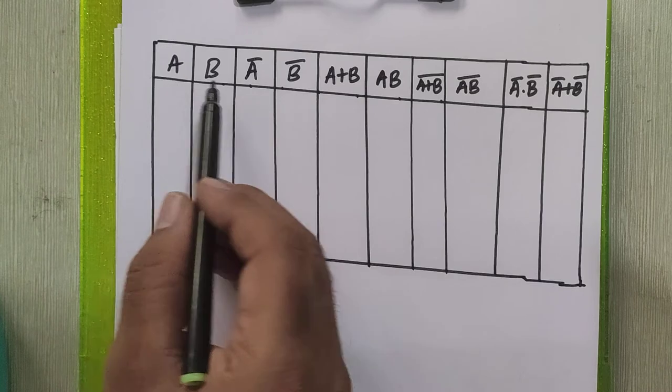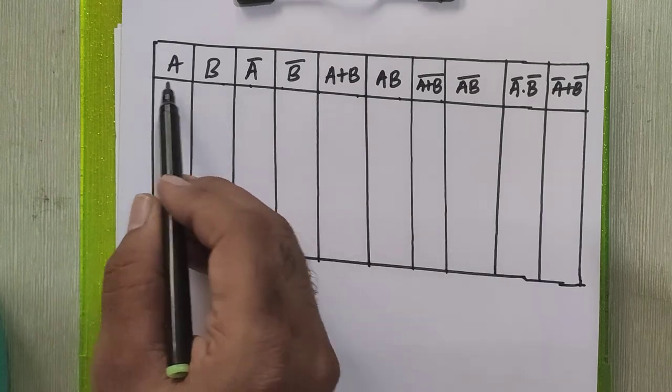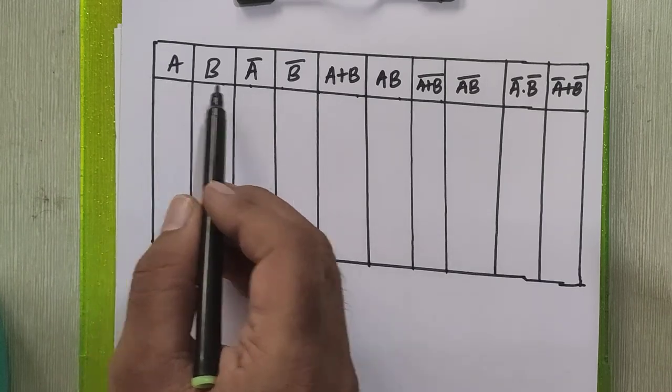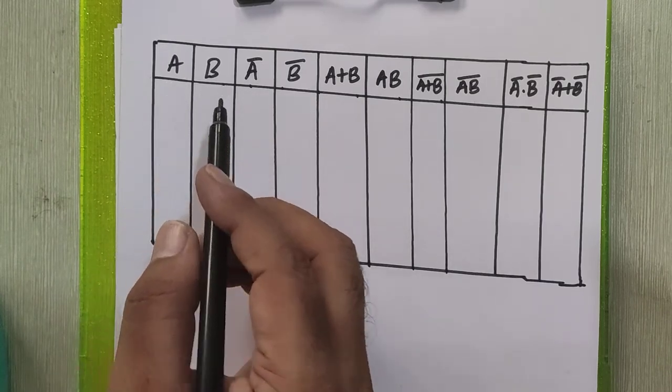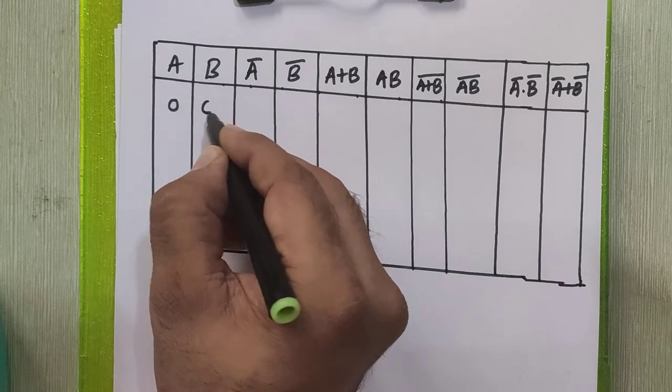These are two input variables — A and B are two inputs. For two input variables we have four possible combinations: 0,0 then 0,1 then 1,0 and then 1,1.